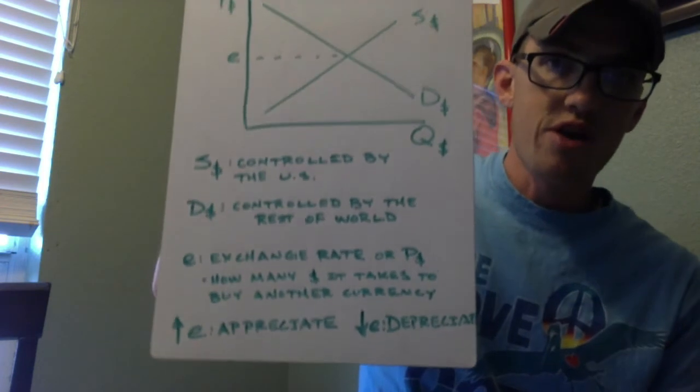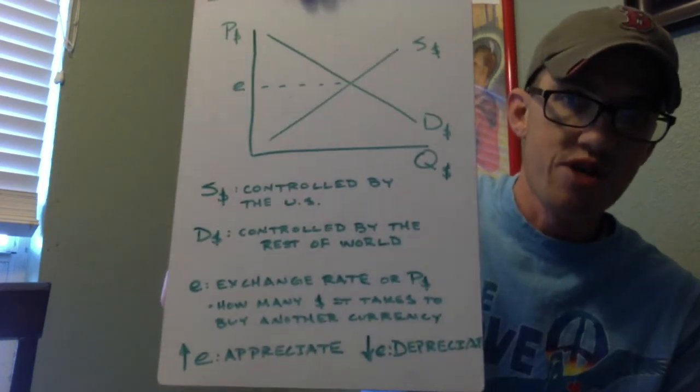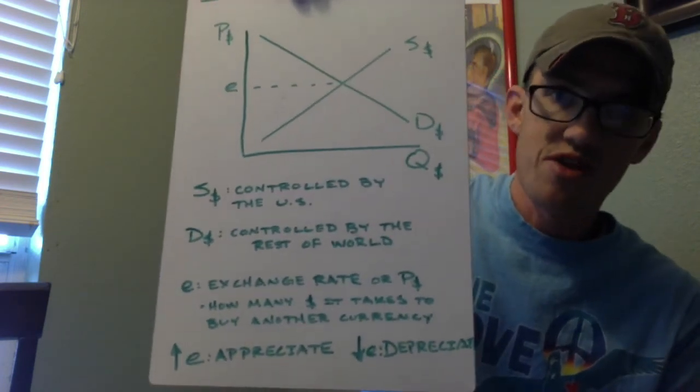Again, E, where they intersect, is the exchange rate or price of the dollar. And again, how many dollars it takes to buy another country.